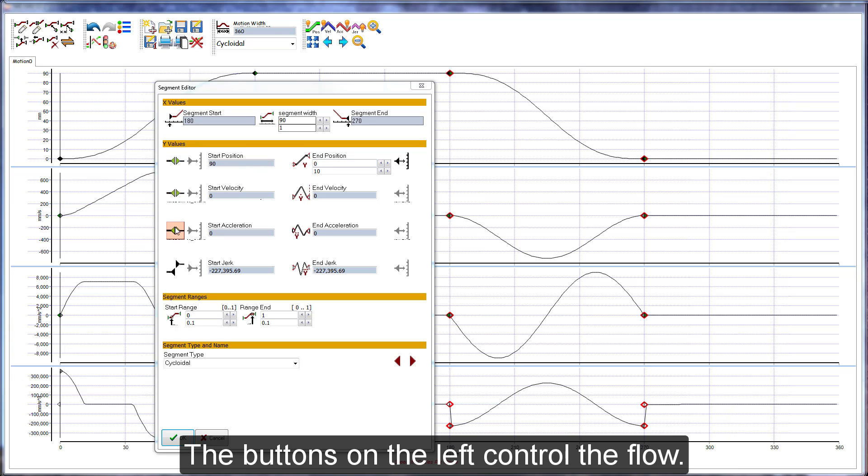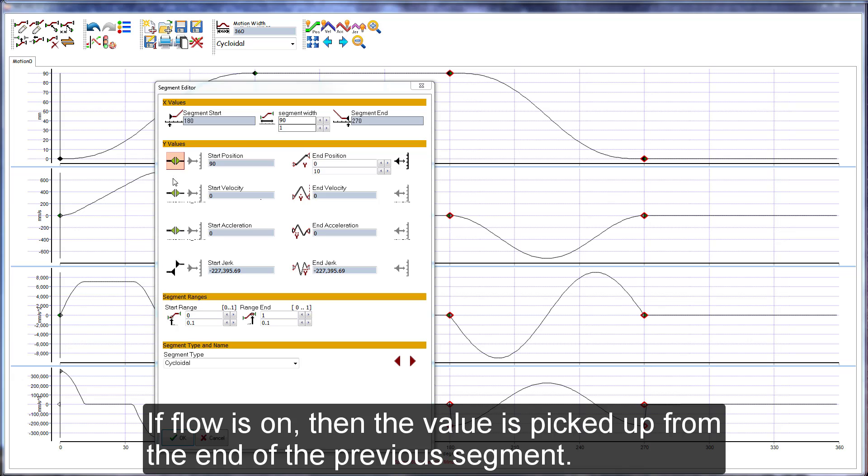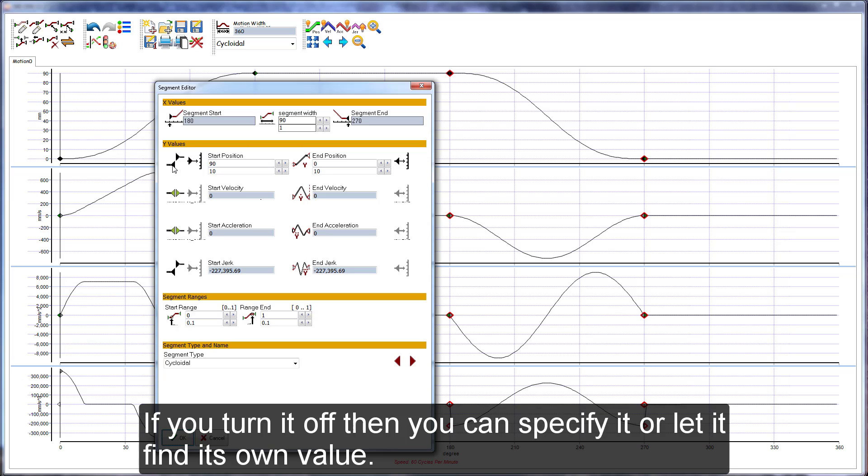The buttons on the left control the flow. If the flow is on, then the value is picked up from the end of the previous segment. If you turn it off, then you can specify it or let it find its own value.